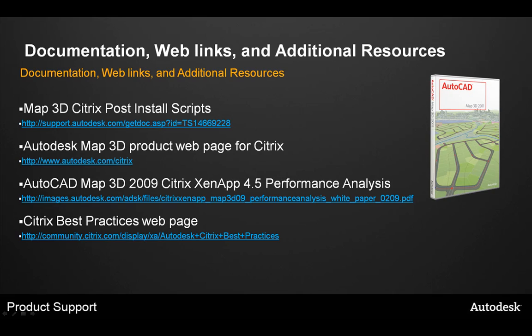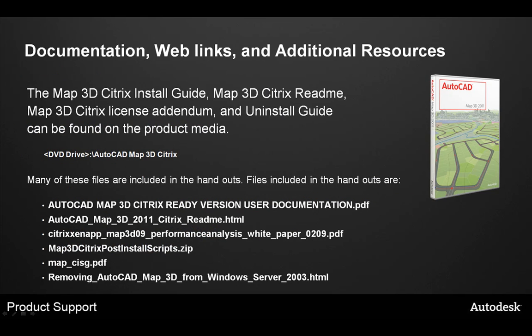Some documentation and web links available on the web include the Map 3D Citrix post-install scripts at TS14669228, the Autodesk Map 3D product web page for Citrix, the AutoCAD Map 3D 2009 Citrix XenApp 4.5 performance analysis, and Citrix's Autodesk Citrix best practices web page. Documentation is also available on the media or through the electronic download, including the Map 3D Citrix Install Guide, the Map 3D Citrix readme, the Map 3D Citrix license addendum, and the Map 3D 2011 uninstall guide. Many of these are also included as handouts for this presentation, as is the performance analysis. This concludes the presentation for troubleshooting AutoCAD Map 3D in the Citrix ZenApp environment.